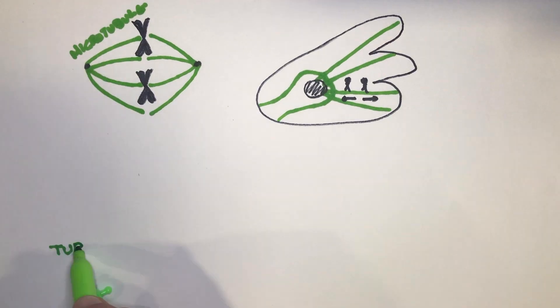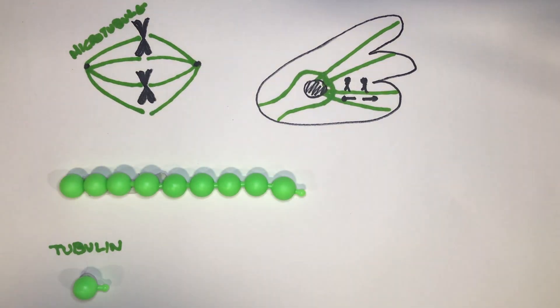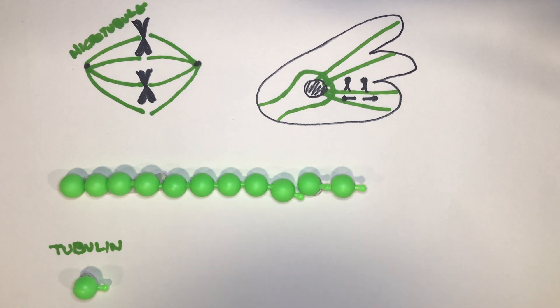Microtubules are polymers made up of many individual tubulin protein monomers and they are dynamic, they grow and shrink. Microtubule position in cells requires regulation of their dynamics.